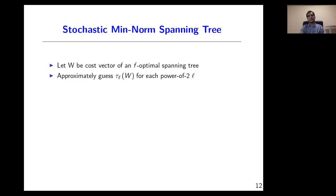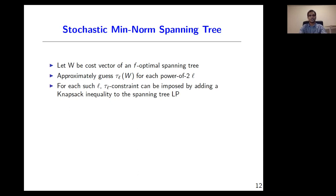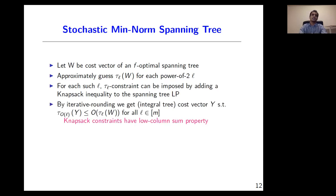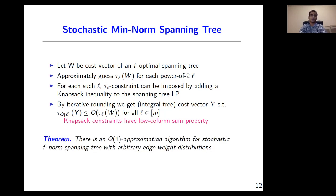Let's switch gears and see how our framework can be used to design approximation algorithms for stochastic minimum norm versions of spanning tree and load balancing problems. We start with spanning trees since the ideas are easier to follow. Let W denote the cost vector of an optimal spanning tree, and suppose we have approximately just the tau-L statistic of W for each power-of-2 L. We include valid inequalities to the spanning tree LP to model tau-L constraints, achieved by writing a knapsack inequality for each such L. By iterative rounding, we obtain a spanning tree whose tau-L statistics can be bounded in terms of tau-L statistics of the optimal solution. This leads to an order-1 approximation for stochastic f-norm spanning tree with arbitrary edge-weight distributions. The theorem also generalizes to the matroid setting.